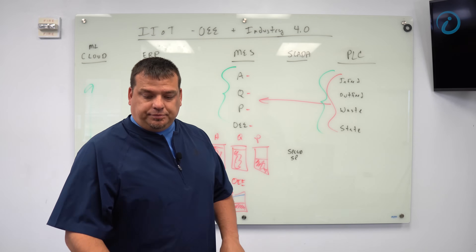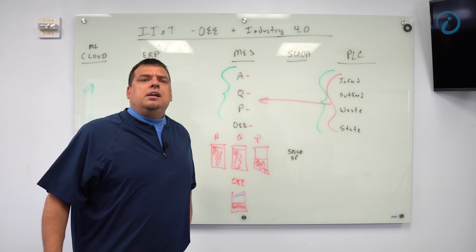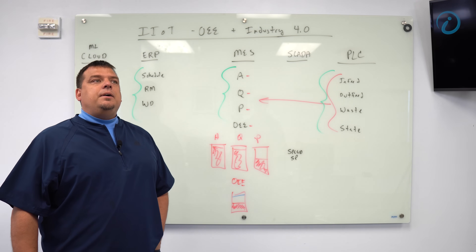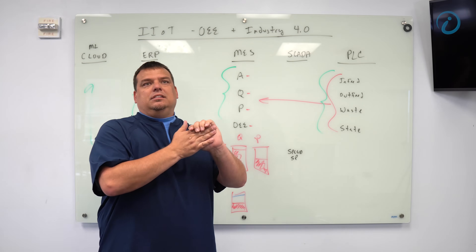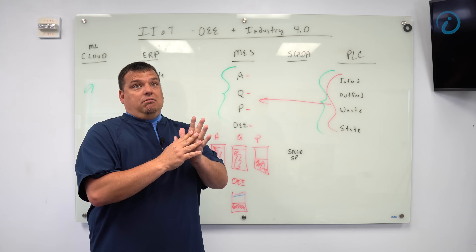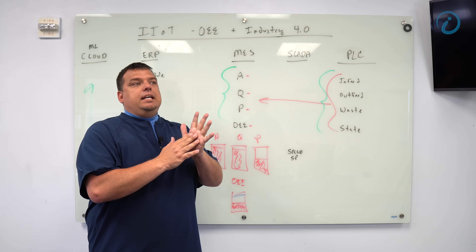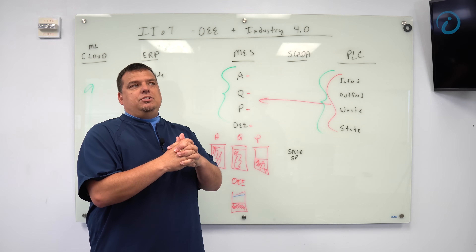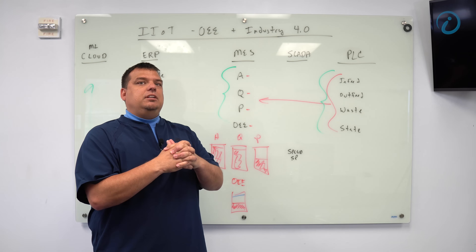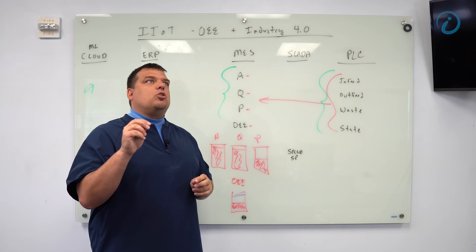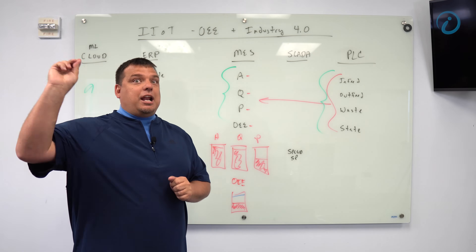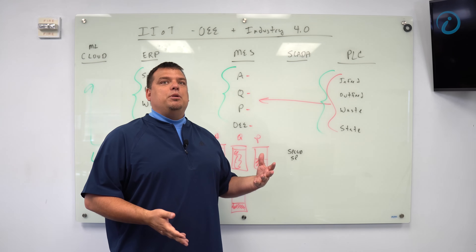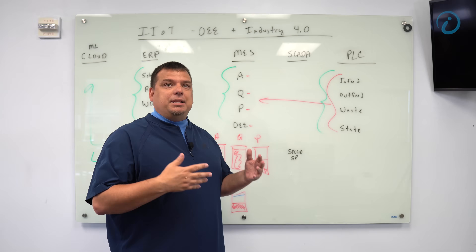In your honest opinion, how long of a runway does a manufacturer have if they choose not to adopt this to remain viable in the market? The runway's not long. If you don't have an IIoT strategy today, if you don't have a digital transformation strategy today — and it's important — there are a lot of people out there telling you they can digitally transform your business, and what they're doing is painting you into a corner. That's the reality.